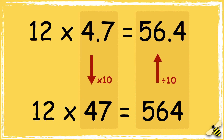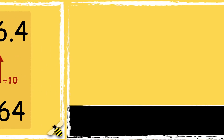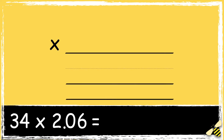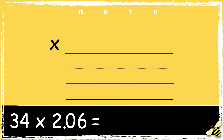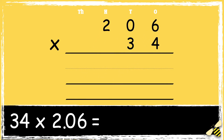Here's another example: 34 multiplied by 2.06. Remember we need to line the numbers up correctly. Initially we ignore the decimal point and treat it as if it was a whole number, so 34 multiplied by 206. We start with 4 times 6 which is 24 — we carry the 2 below in the tens column as it represents 2 tens. Then we multiply 4 by 0 tens: 4 times 0 is 0.